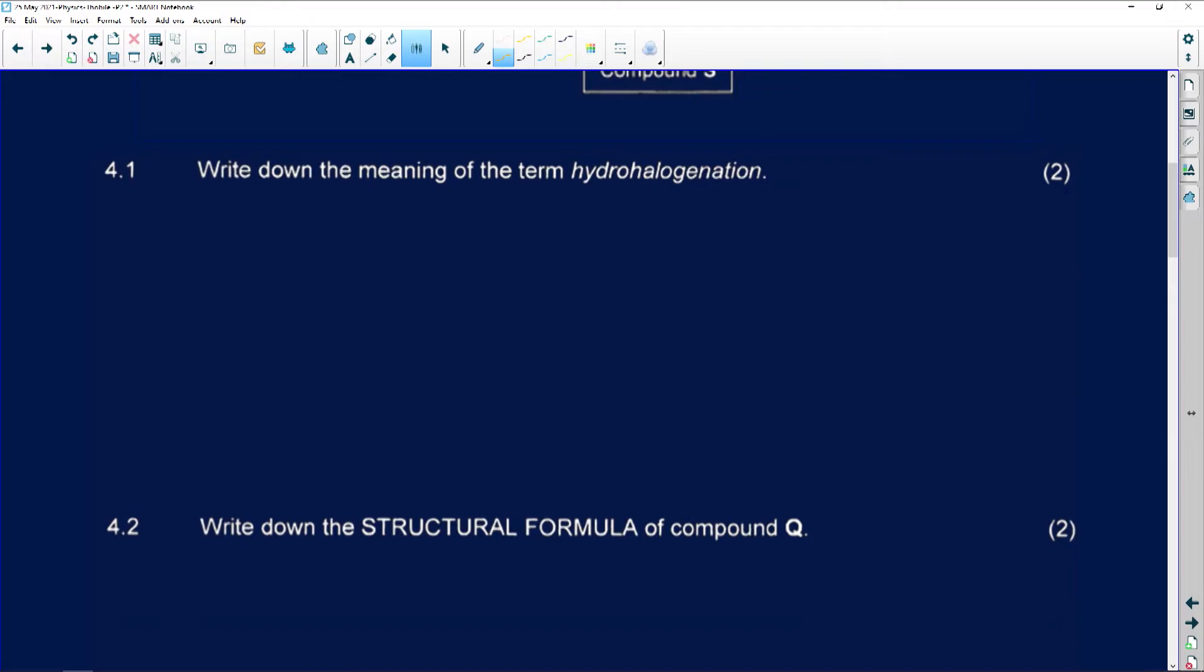Number 4.1 says write down the meaning of the term hydrohalogenation. Already by seeing hydro, I can see that it is an addition reaction. So it is the addition of a hydrogen halide, and this is added to an alkene. So when we are adding something, it is an addition reaction by breaking a double bond.